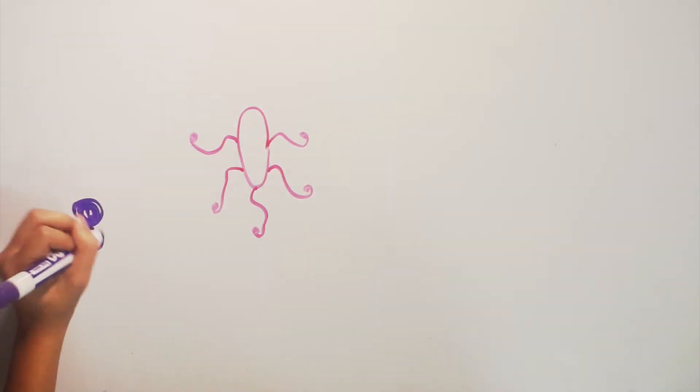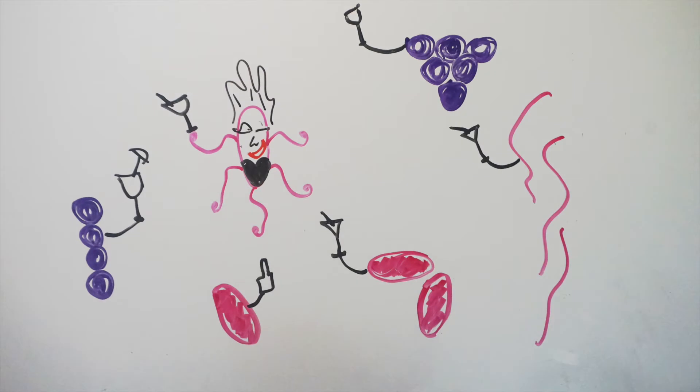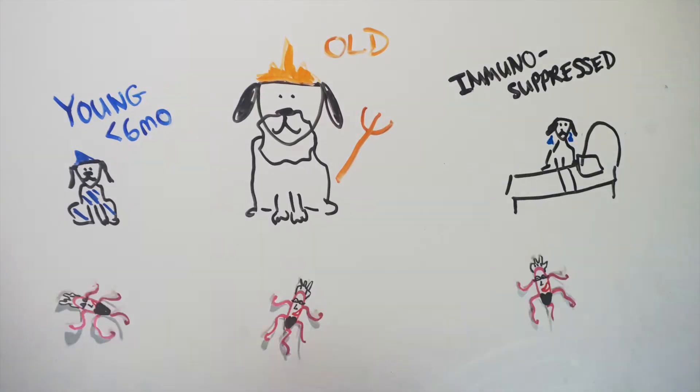She is agile, evading the immune system while also inviting opportunistic pathogens to her colonization party. She will infect all ages if possible, however the young, older, and the immunosuppressed are her more likely targets.